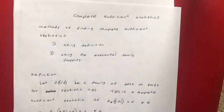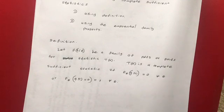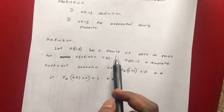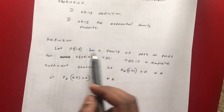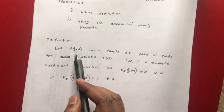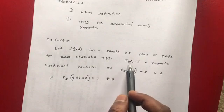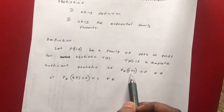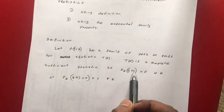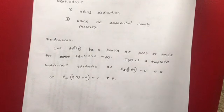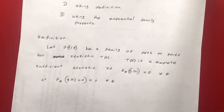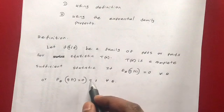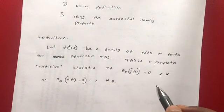So first I am going to talk about the definition of the complete sufficient statistic. The definition is as follows: let's say we have a family of probability density functions or probability mass functions, denoted as f of t given theta for the statistic T(X). Then T(X) is a complete sufficient statistic if the expectation of g(T) given theta is equal to 0 for all theta, or in other words, the probability that g(T) equals 0 given theta is always equal to 1 for all theta.